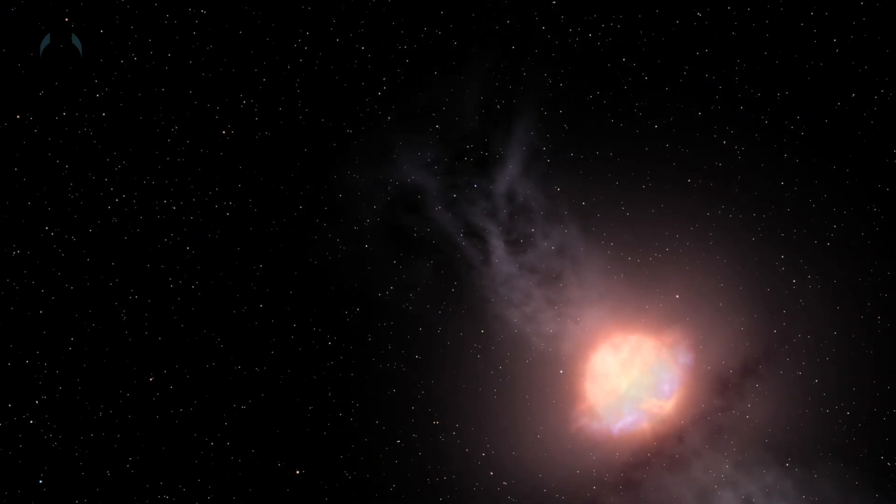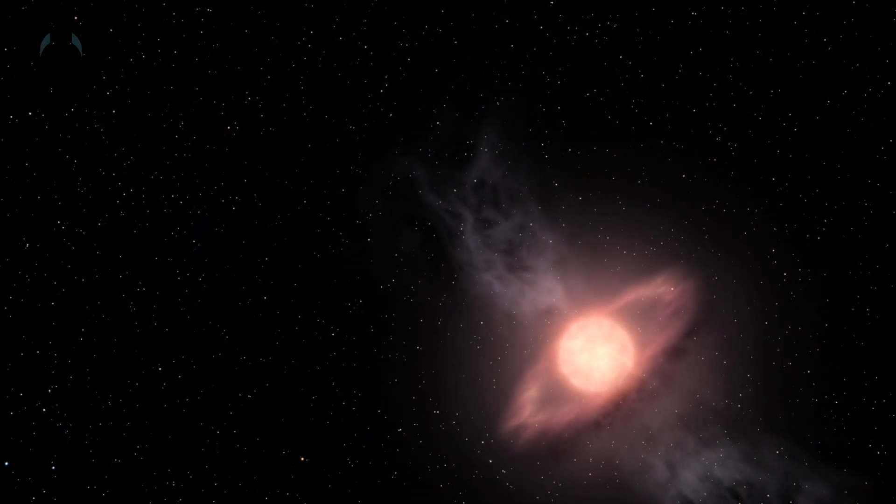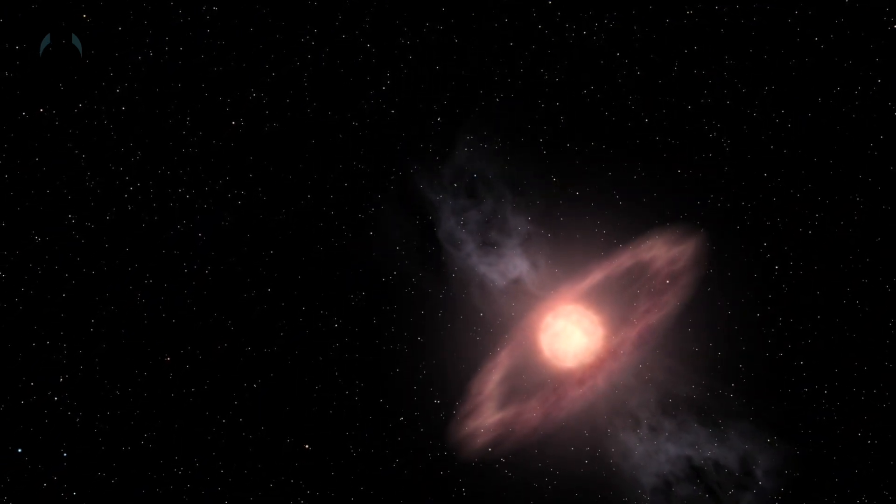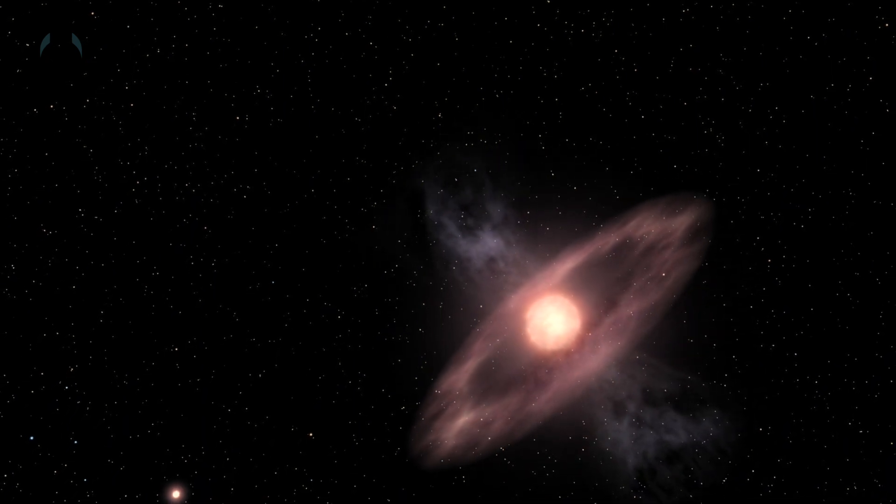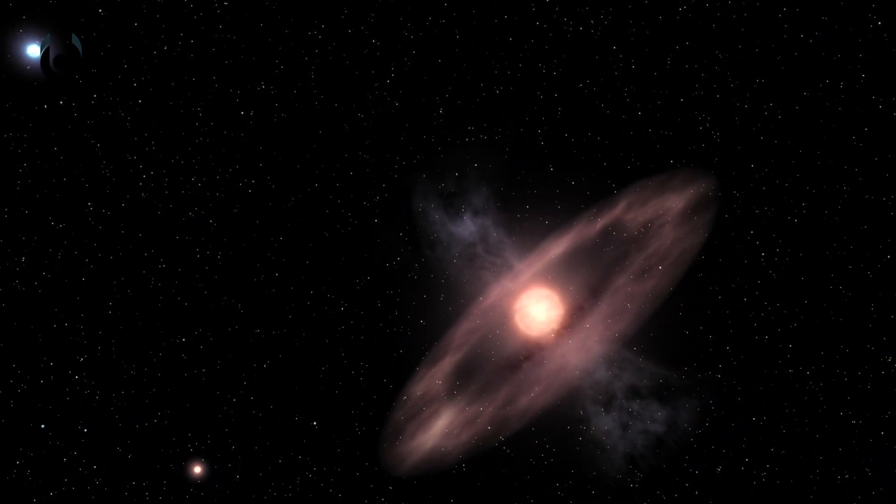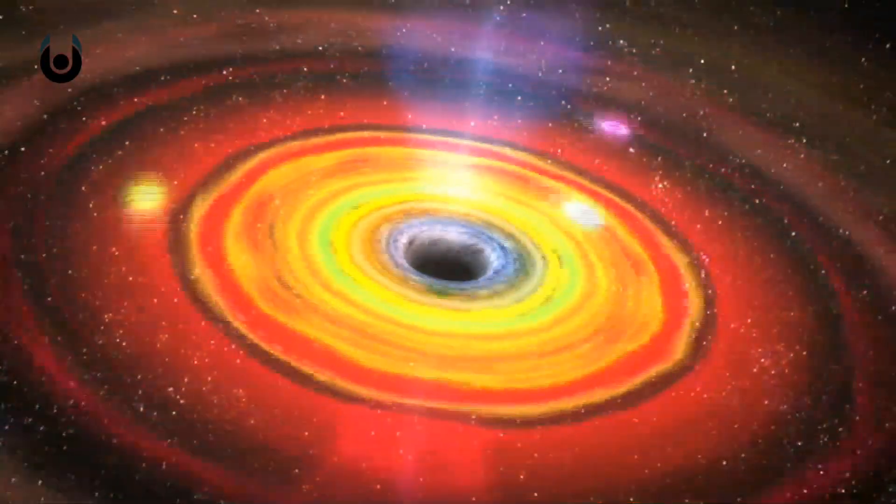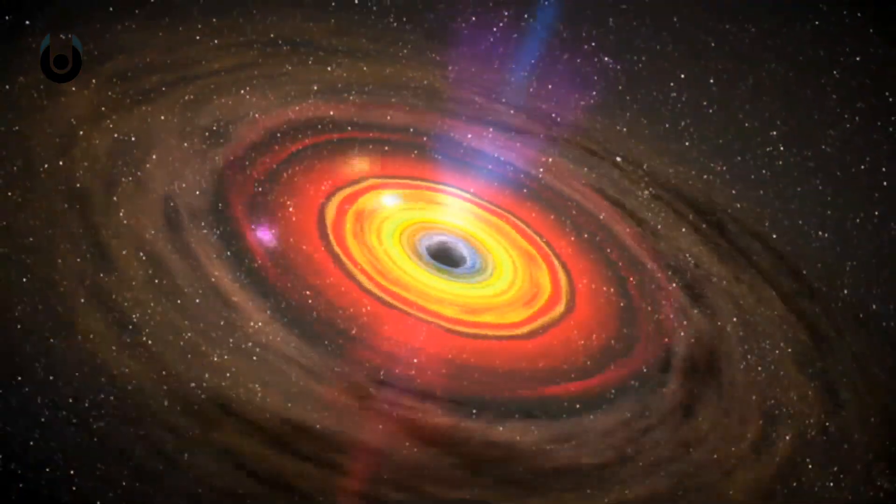Some black holes happen when a massive star, much bigger than our own, dies. These stars collapse and form small, yet incredibly dense areas of space-time, with an extremely strong gravitational pull. They get their black hole name because they eat up all the light around them, along with everything else.